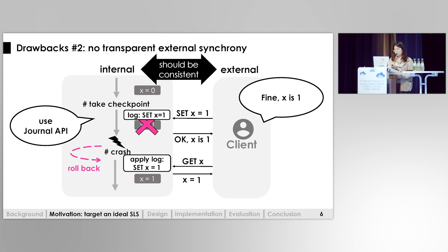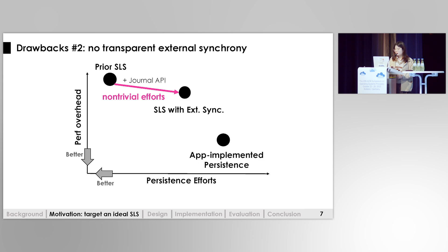Some single-level storage systems choose to provide general APIs for applications to log requests and apply the log when rolling back. With this, the request is consistent and clients can get a consistent response. However, non-trivial efforts are required to modify the applications to use this journal API, which contradicts single-level storage's original intention to liberate applications from persistence efforts.